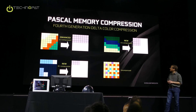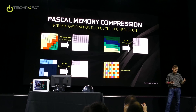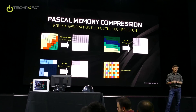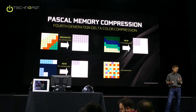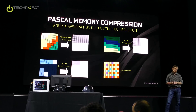In Pascal, we have our fourth generation of delta color compression. The classical compression from the Maxwell generation is basically: if you have four colors around that are the same value, you can just store one — you can save four times. But that's a very limited scenario; it doesn't work for 1xAA, for example, and it doesn't work if it's a triangle that intersects a slice in 4xAA.